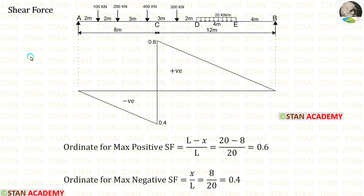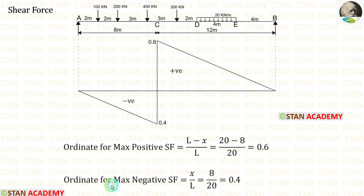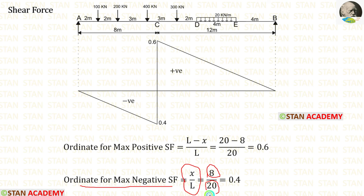Now let us calculate the shear force. We know that the ordinate for maximum positive shear force equals (L − x) / L. The total length is 20 m and x is 8 m, giving 0.6. The ordinate for maximum negative shear force equals x / L; with x = 8 m and L = 20 m, we are getting 0.4.